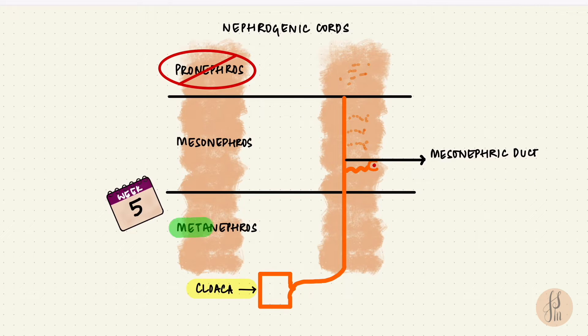By the fifth week, the metanephros forms. Now this is going to form the actual kidney. It starts functioning towards the 12th week. It takes over from the mesonephros.